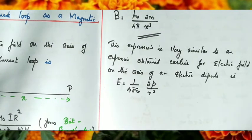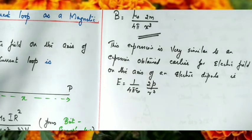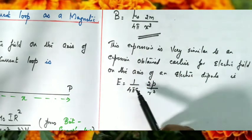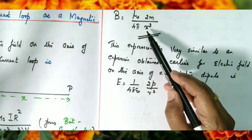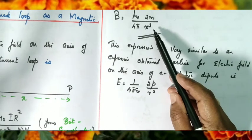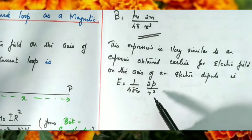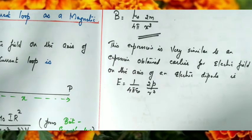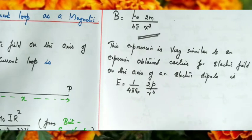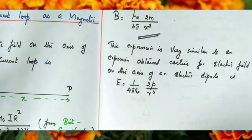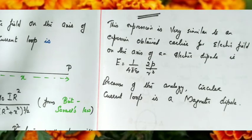This expression is very similar to the electric field on the axis of an electric dipole: E = (1/4πε₀)·(2P/R³). Here μ₀/4π corresponds to 1/4πε₀, and magnetic moment M corresponds to electric dipole moment P. Because of this analogy, the circular current loop acts as a magnetic dipole with a magnetic dipole moment.